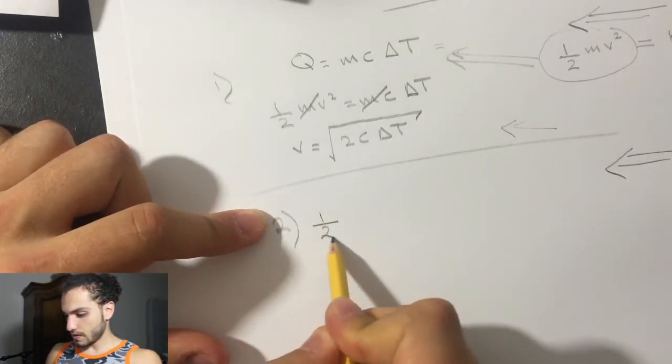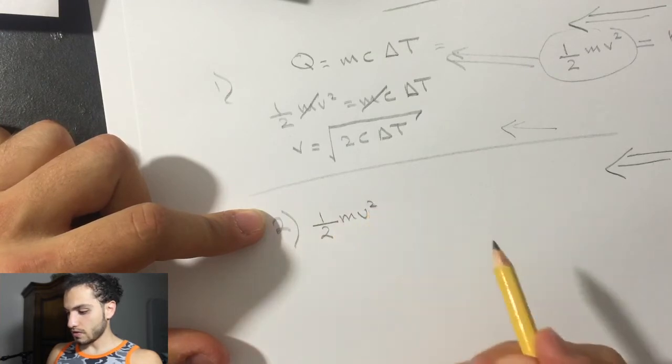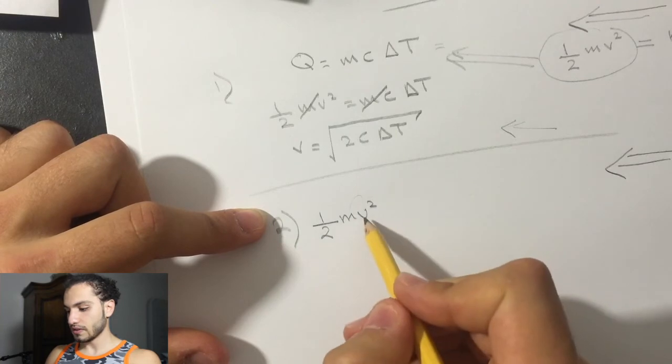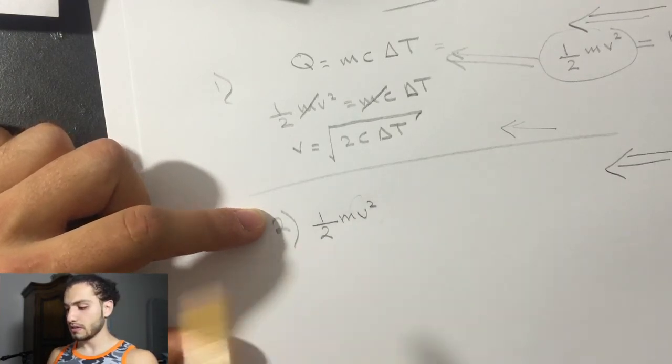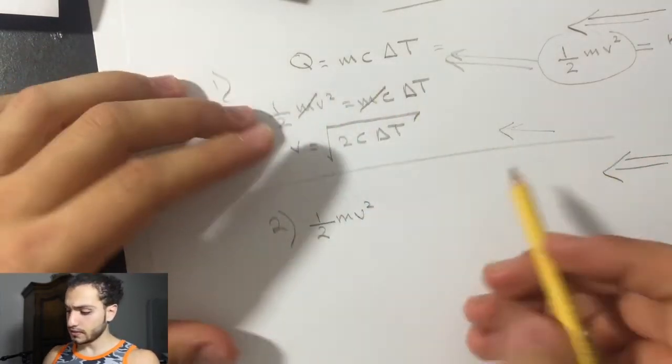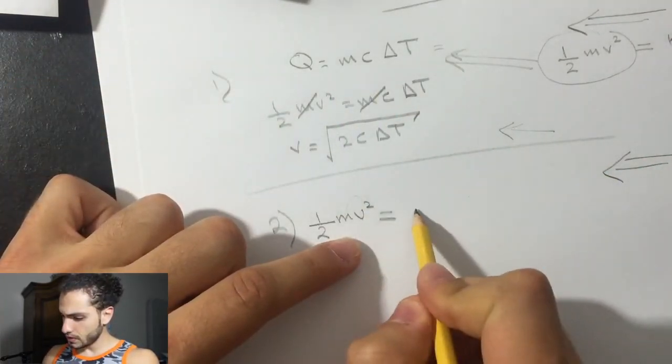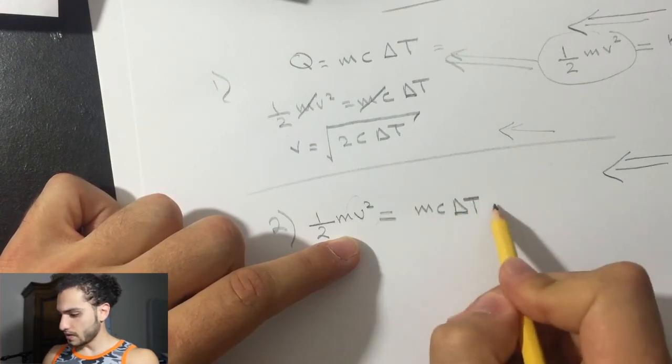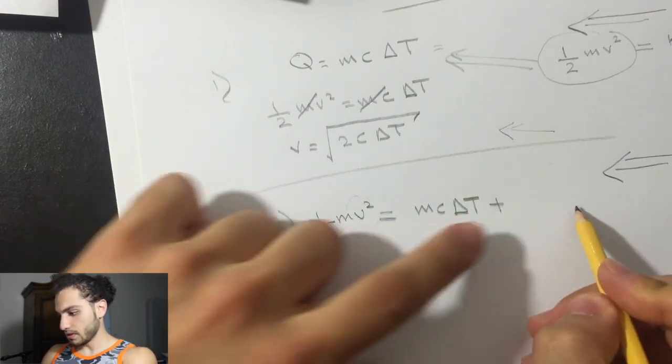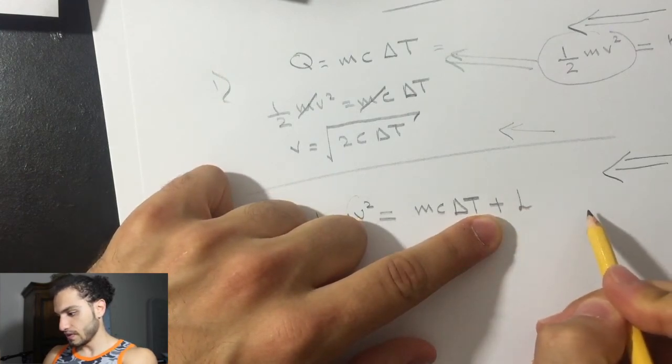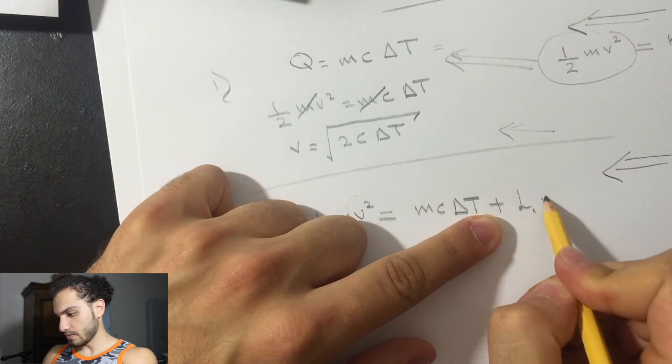So half mv squared. They want velocity if it melts completely. Obviously, it's going to be higher because it's going to go to the melting point and then it melts. So it's going to be equal to mc delta T. Now we're going to add this, which is plus the latent heat of the iron times its mass.